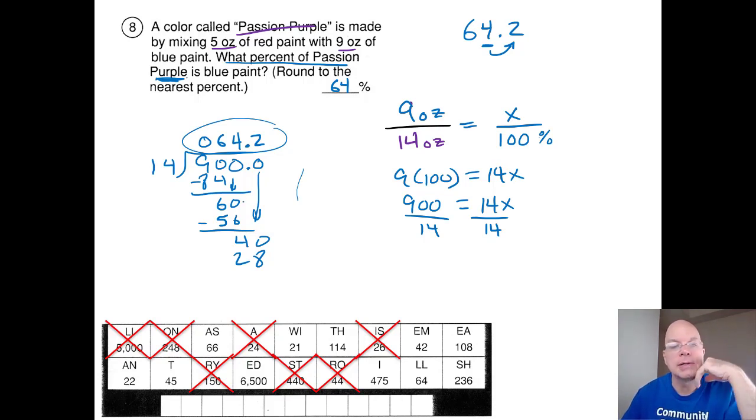So my passion purple is 64% blue paint. If I'm mixing more blue paint than red paint, more than half of the paint is blue paint. So I feel good with 64%, especially when I see it down here. Okay.